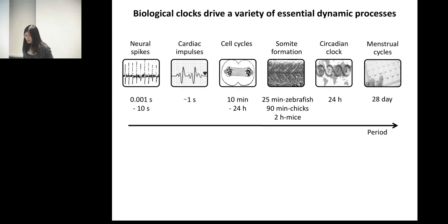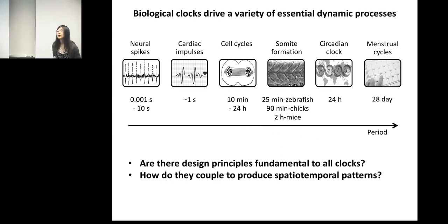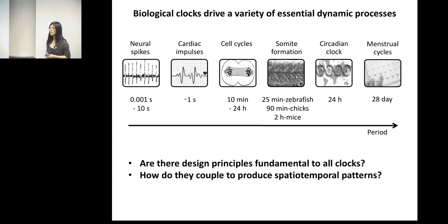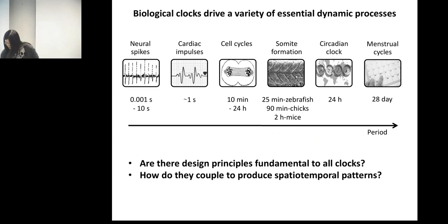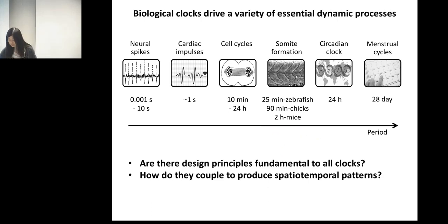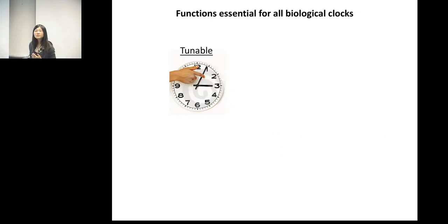I'm a physicist by training, so one intuitive question interesting to me is: is there any fundamental design principle that exists and is shared among all these very different clocks? In addition, multiple clocks may co-regulate the same process. Another question we are interested in is how different clocks couple together to form spatial-temporal patterns, such as those seen in somite formation. I will specifically talk about these two questions today — first, to find the fundamental design features shared among the clocks.